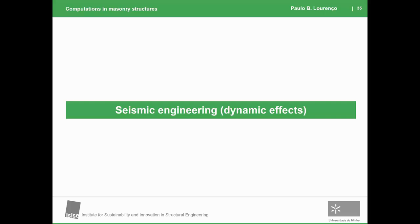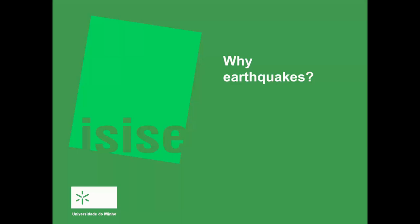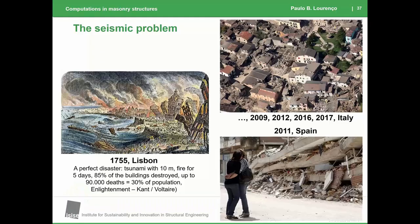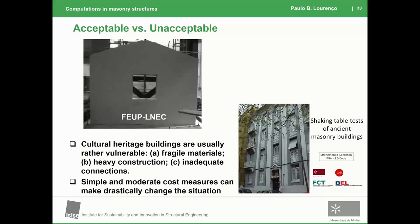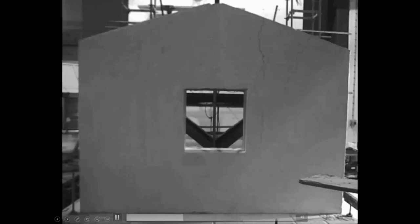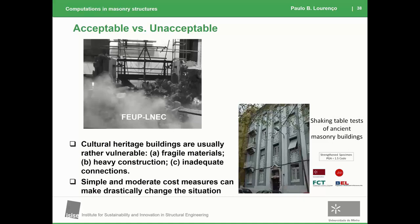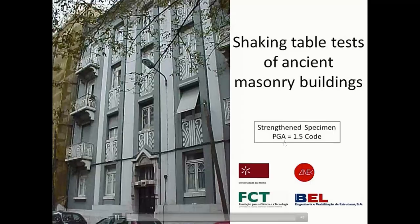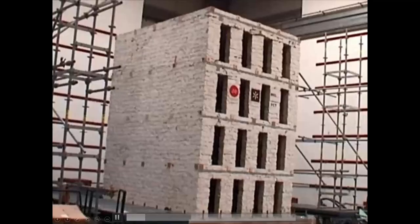I'd like to show two other applications today. One is seismic engineering, where you have dynamic effects. Why earthquakes? Earthquakes are a recurrent problem — they appear everywhere in the world and are the deadliest natural hazard, killing more people across the world than any other. Here are two examples of how earthquakes work: a facade with two retaining walls subjected to an earthquake perpendicular to the screen. With a strong shake and very weak material, you kill people inside and outside, and lose all the property.